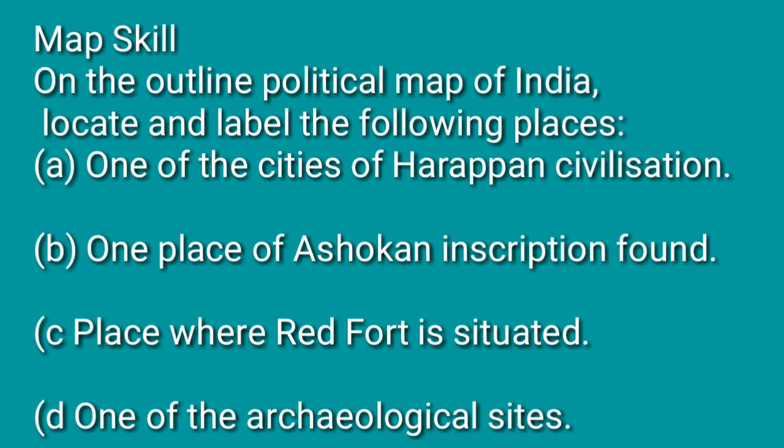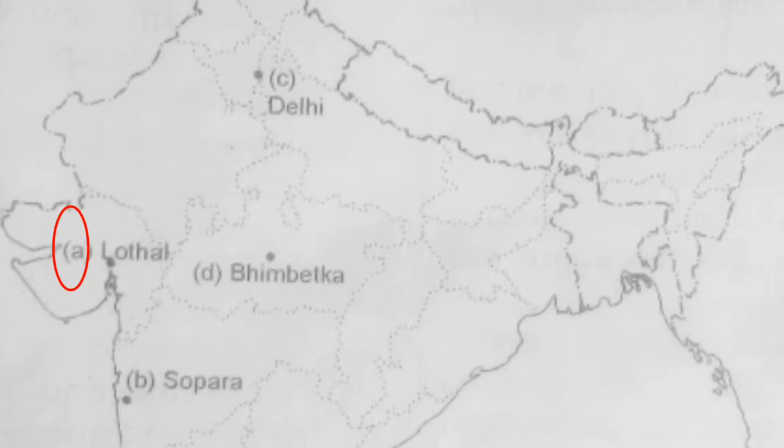I will do it on the next page — get ready. The first one is one of the cities of the Harappan civilization. It is in Gujarat, and that is Lothal. The second place is where a rock inscription was found, and that is in Maharashtra.